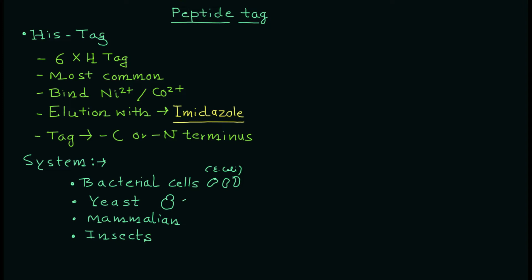To recap the expression systems: you can use E. coli cells, yeast Saccharomyces cells, mammalian cell lines such as HEK 293, or insect cell lines — all of which will give you good results when purifying your protein using the histidine tag.